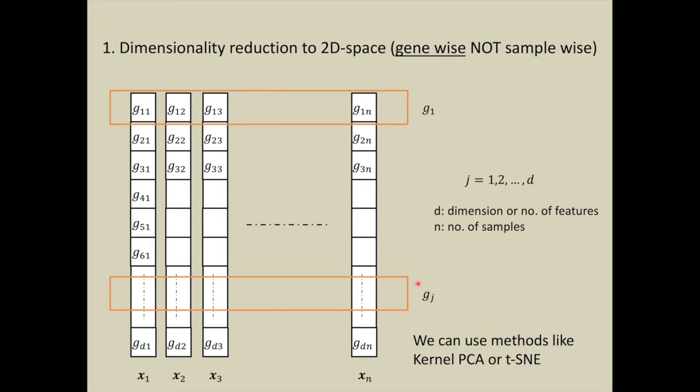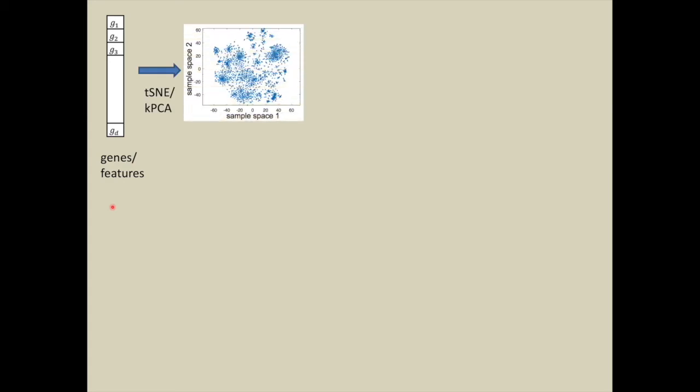Before we had n number of samples. Now we have d number of samples, and each sample has n dimensions. By using gene-wise, we have transposed the data. Now we can use some dimensionality reduction techniques like kernel PCA or t-SNE.